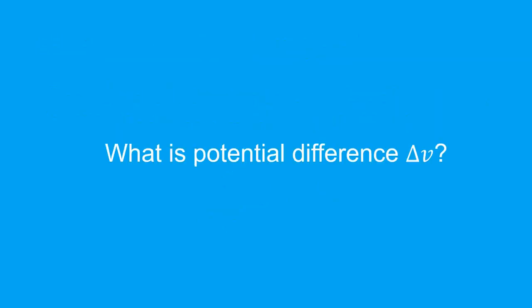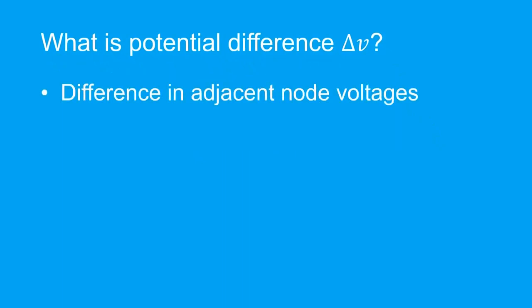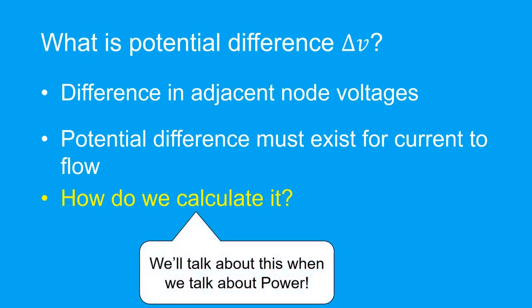But what is potential difference? Well potential difference is literally the difference in adjacent node voltages. It's important to know that a potential difference must exist for current to flow. The most important question to ask is, how do we calculate potential difference? We'll leave this for now and we'll return our discussion on this when we talk about power in some other video.